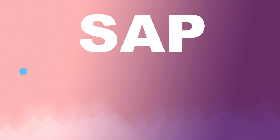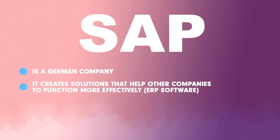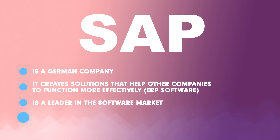Let's summarize. SAP is a German company. SAP creates solutions that help other companies to function more effectively — such software is called ERP. SAP is a leader in the software market and is really big.